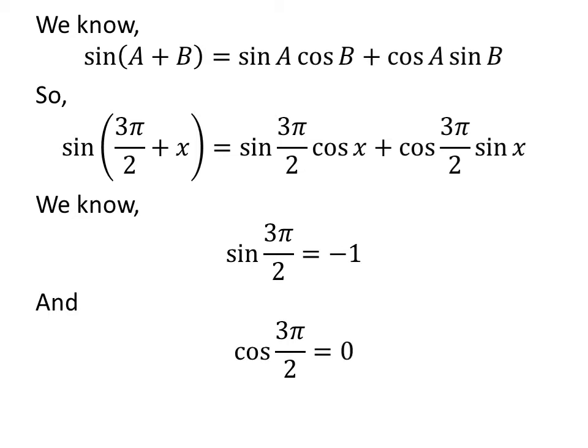Also, cosine of 3 times pi upon 2 is equal to 0. The verification of this trigonometry identity is explained in the video appearing in the upper right corner. The link of the video is also given in the description section.